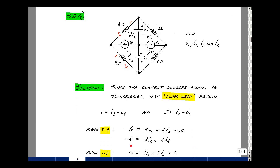Bring the 10 on the other side of the equation as minus 10, so we have minus 4 equal to 3I3 plus 4I4.